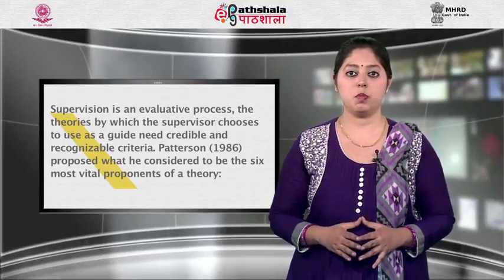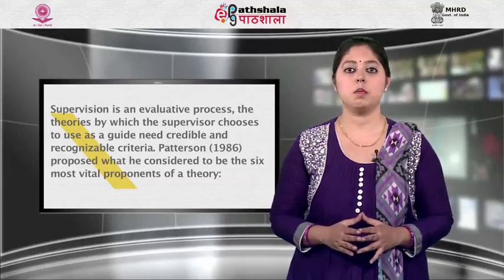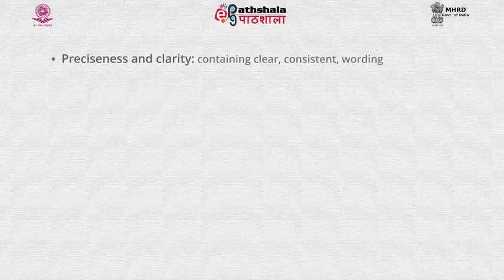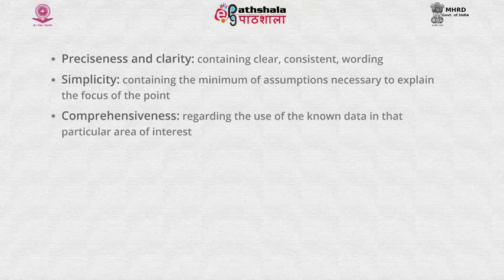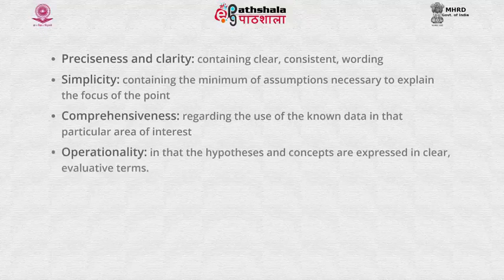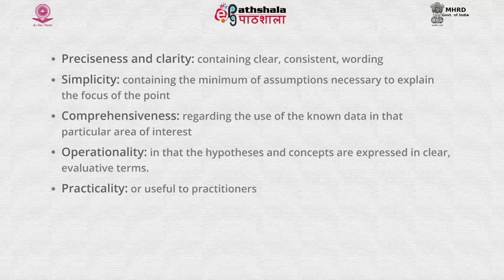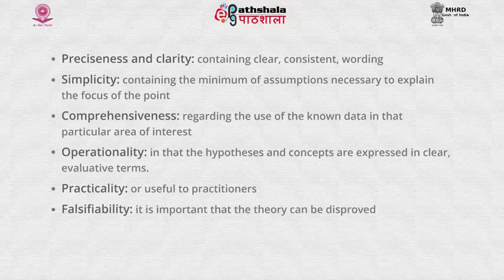Patterson (1986) proposed what he considered to be the six most vital components of a theory. First is preciseness and clarity, containing clear consistent wording. Second is simplicity, containing the minimum of assumptions necessary to explain the focus of the point. Third is comprehensiveness, regarding the use of known data in that particular area of interest. Fourth is operationality, in that the hypothesis and concepts are expressed in clear evaluative terms. Fifth is practicality — useful to practicing people. Sixth is falsifiability — it is important that the theory can be disproved.